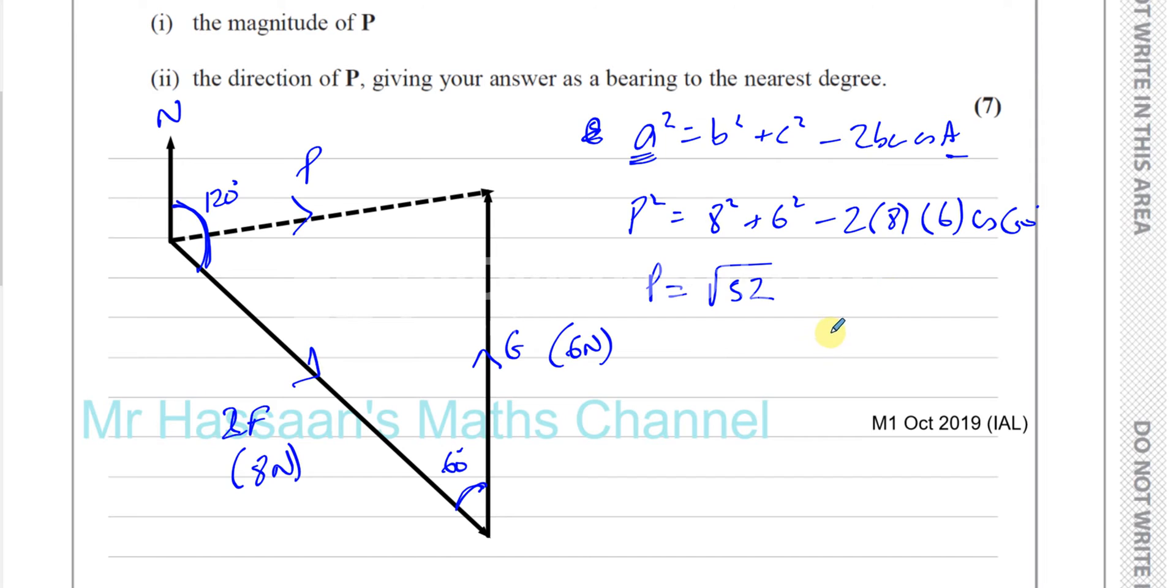Okay, so if you work that out, that's going to be 13 times 4. 40 plus 13 times 4. That's 2 root 13. Okay, Newtons.